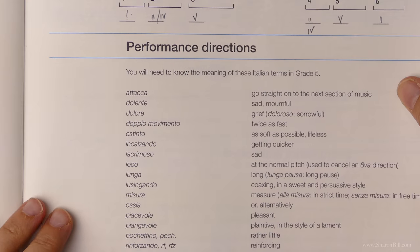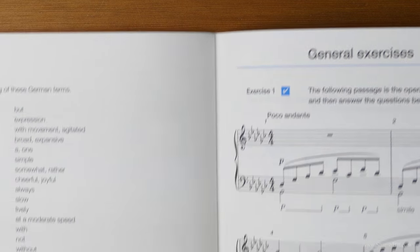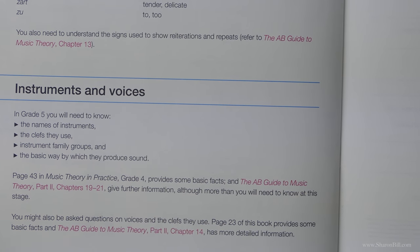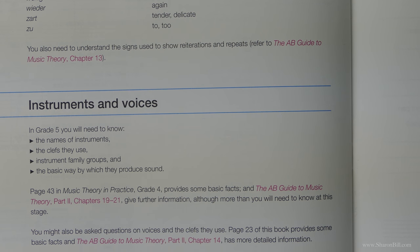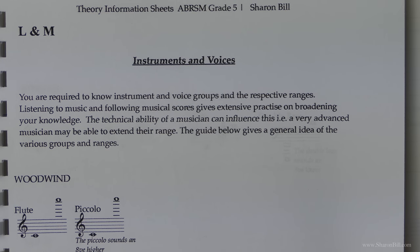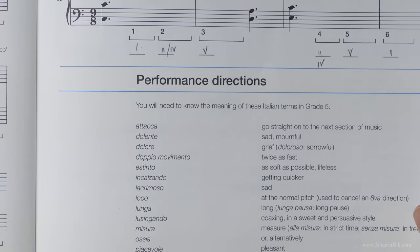We're getting towards the end of the book now. We're going to turn to page 51 and we're going to be looking, just briefly, at the performance directions, and if you turn over to page 52 it continues, and then we're talking about instruments and voices as well. It might be helpful for you to turn in your PDF document towards the back, where you'll find a few pages I've referred to as sections L and M. This is quite a lot of general knowledge that you're required to accumulate.